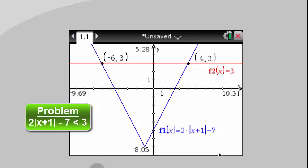So the original problem had a less than sign. So it was saying, when is this function, the left side of our problem, less than this function? What that means is, where on this picture, where in this picture, is this V shape below the line? That's what less than means. It means below. So less than means below.